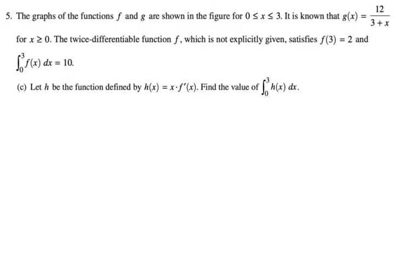Let h be the function defined by h of x is x times f prime of x. Find the value of the integral from 0 to 3, h of x dx. This, to me, looks exactly like integration by parts. Let's start off by writing it. So we're doing the integral of x times f prime of x. I'm going to pick a u and a dv.